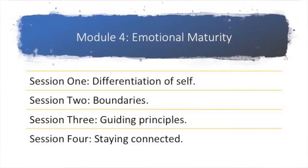Module 4 is Emotional Maturity. Session 1 is about the differentiation of self. Session 2 is about boundaries. Session 3 is about developing guiding principles. And Session 4 is also a new session about how do we stay connected. We talk about that a lot, and if you've been through Faith Walking, you understand — staying connected is an important piece of our own emotional maturity.